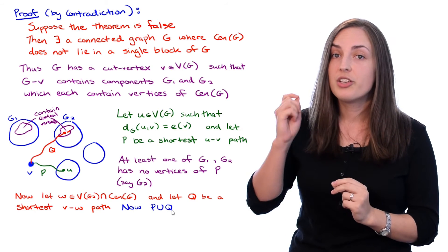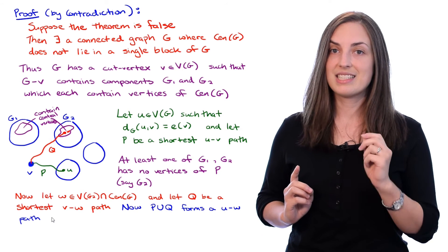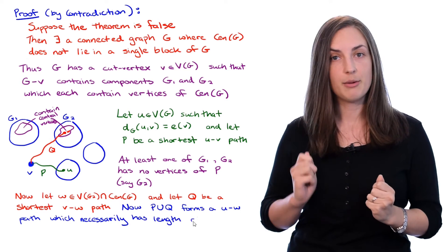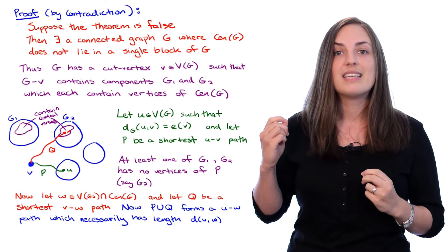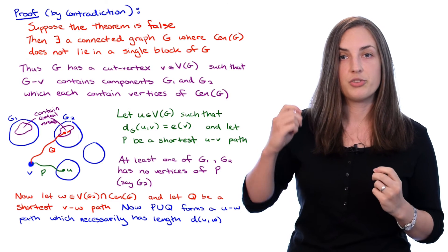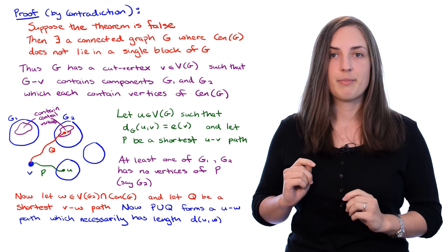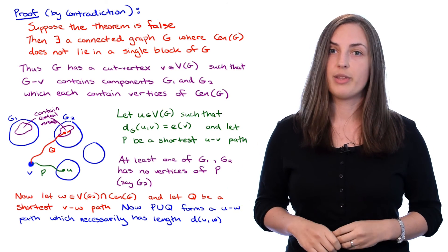be a vertex in G2 and in the center and let Q be a shortest VW path. Now P union Q is a UW path which necessarily has length equal to the distance from U to W. This means that P union Q is a shortest path from U to W. This is because P and Q